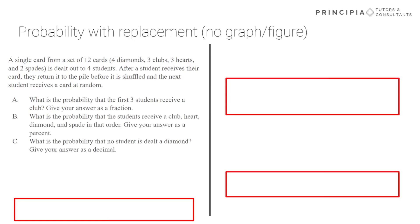All right, let's do some probability with replacement without the accompanying graph or figure. So this problem, we got 12 cards. As stated, four students. It notes that we are replacing the cards each time, so it's shuffled back in. Pause the video. Try to solve each of the parts on your own, and we'll review together in a couple seconds.